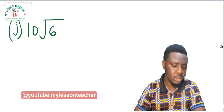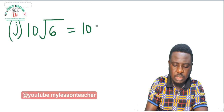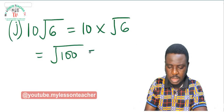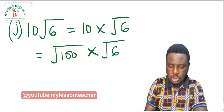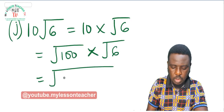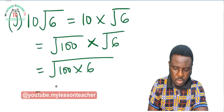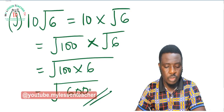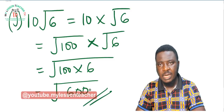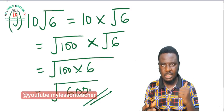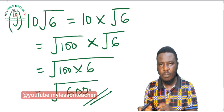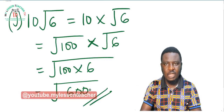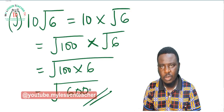Our last example J: 10 root 6. This can be written as 10 times root 6. Since root 100 equals 10, this becomes root 100 times root 6, which equals root of 100 times 6 — root 600. So if you simplify root 600 you get 10 root 6. You can also try going back to the previous lesson and reversing the process to confirm all the answers.